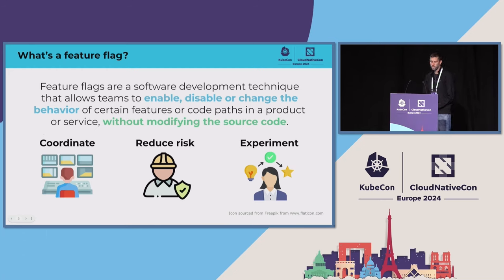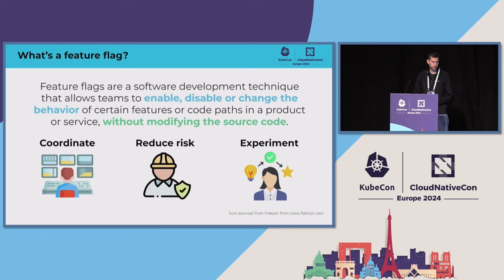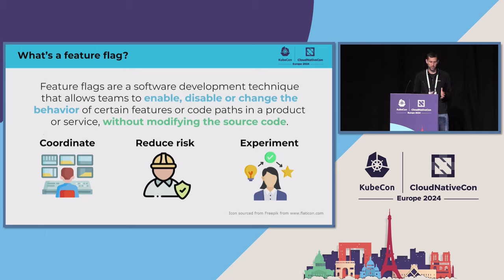Before we dive into the technical details of the presentation, I'd just like to do a quick level set on what a feature flag is and why they're basically essential to modern software development practices. A feature flag is a technique that allows you to control a pivot point in your application at runtime. They do not require the code to be changed or a service to be redeployed or restarted in order for the value to change.